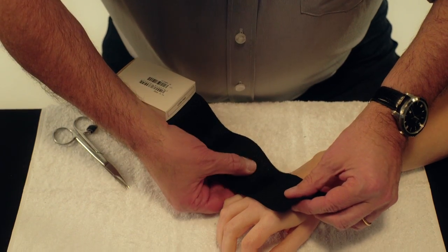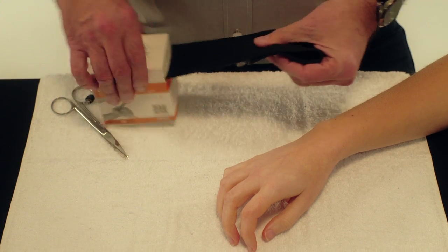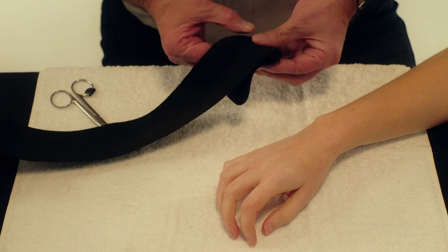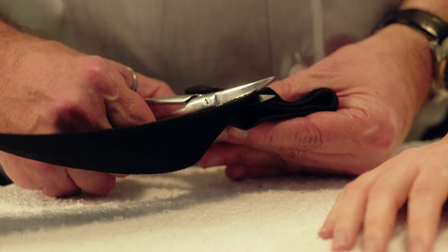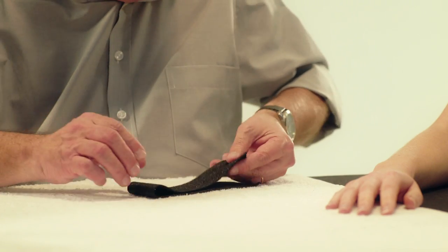Use a strip of OrphiCast which is 6 cm wide and 4 times the width of the hand. Fold the OrphiCast in half widthwise.